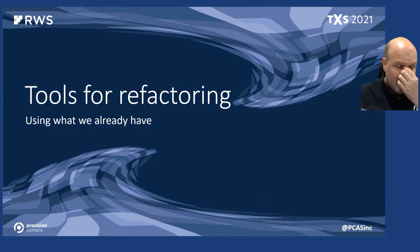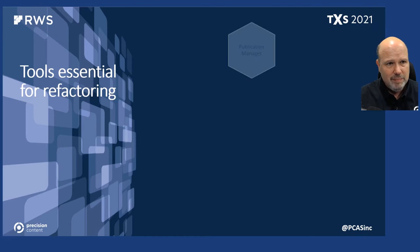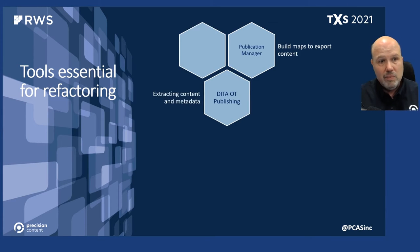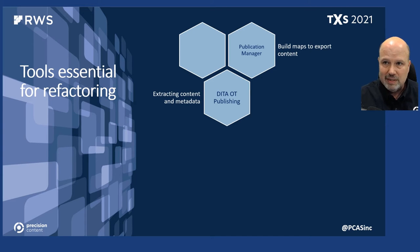We're not really looking at introducing any new expensive tools to accomplish this — we're looking to work with tools you already have on your desktop. Typically we work with Publication Manager to build maps and export content, DITA OT publishing to extract content and metadata and build custom reports into CSV files, and we take quite a bit of advantage of working with XSLT with our content and the publishing capabilities.